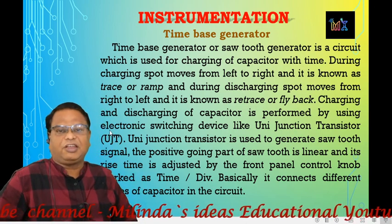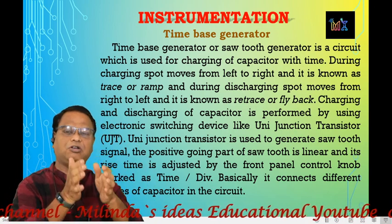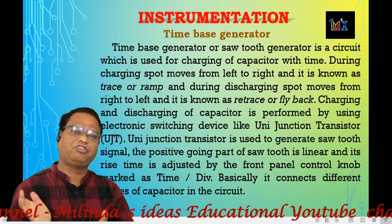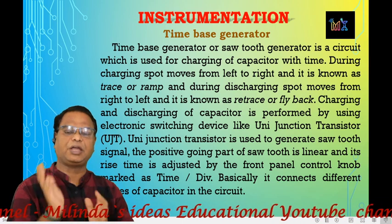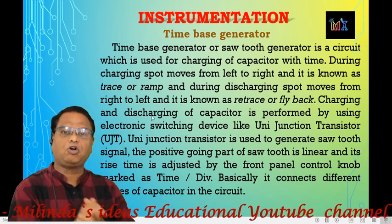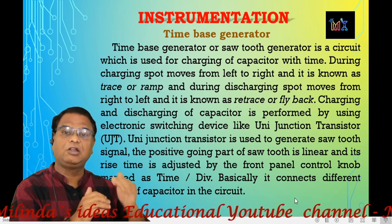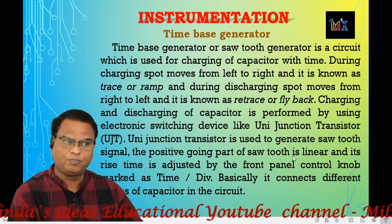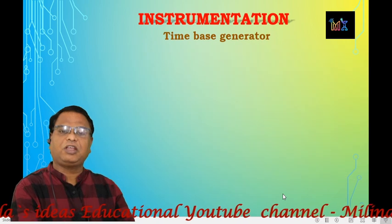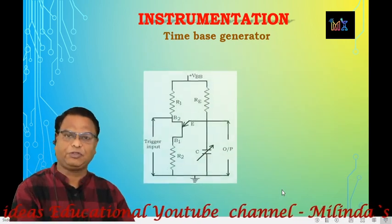In the UJT circuit, a capacitor is connected. The capacitor charging and discharging is used to generate the sawtooth waveform, which provides the horizontal signal to the cathode ray tube.